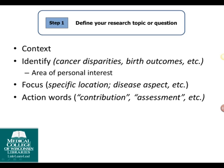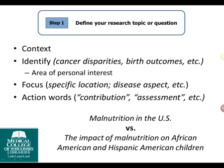Finally, you'll want to use measurable action words that help you move towards an interesting question to answer with your literature review. Action words are nouns derived from verbs and include words like contribution, development, or assessment. Of the two example topics shown, the second would probably be considered the better choice — there is a clear, specific question on a focused topic of personal interest, using an action word to specify exactly what the literature review is seeking to answer.